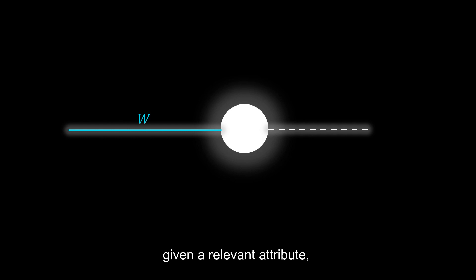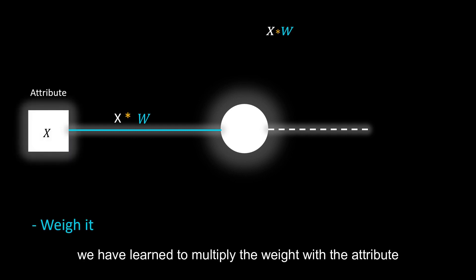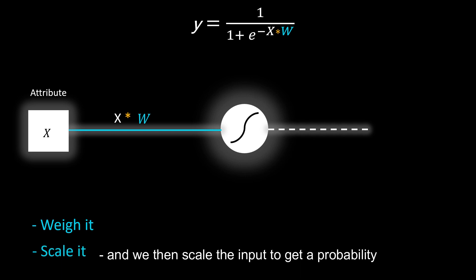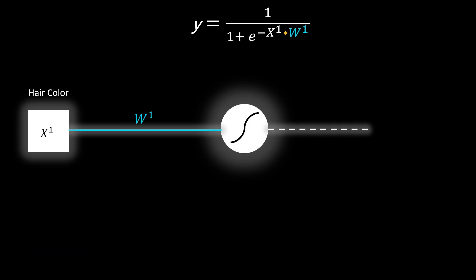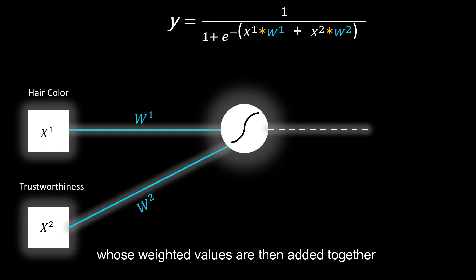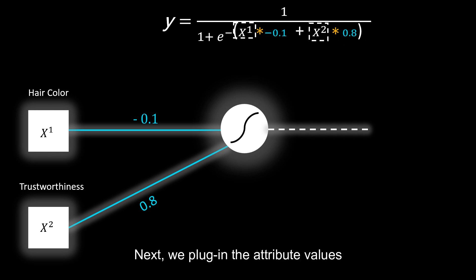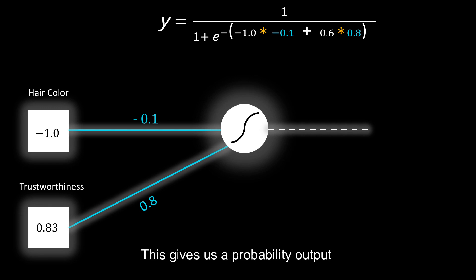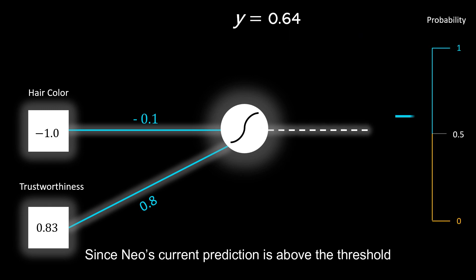To summarize the math: given a relevant attribute, we have learned to multiply the weight with the attribute based on its importance in determining the final outcome, and we then scale the input to get the probability. Now we may have a single input or multiple inputs whose weighted values are then added together. Let us proceed step by step to break this down. First we plug in the weights, next we plug in the attribute values. This gives us a probability output.